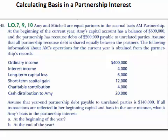Let's take a look at this one where we're interested in calculating the basis in a partnership interest. Amy and Mitchell are equal partners in the accrual basis AM partnership. At the beginning of the current year, Amy's capital account has a balance of $300,000 and the partnership has recourse debts of $200,000 payable to unrelated parties. Assume that all partnership recourse debt is shared equally between the partners, and the following information about AM's operations for the current year is obtained from the partnership's records.